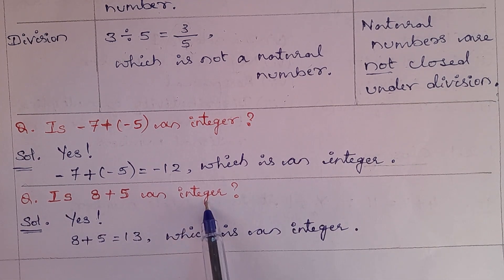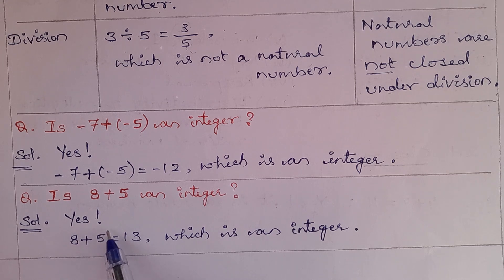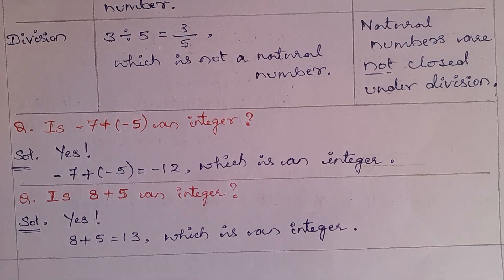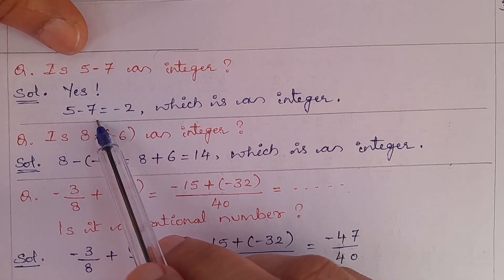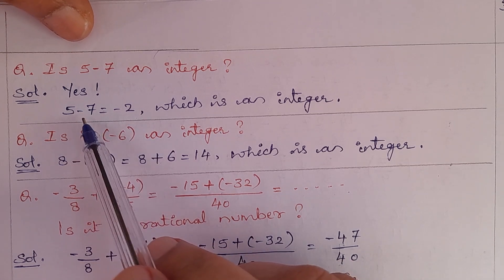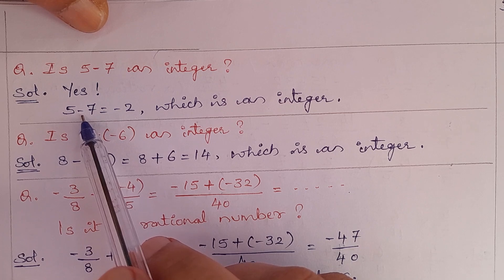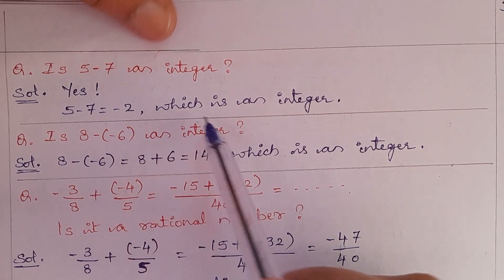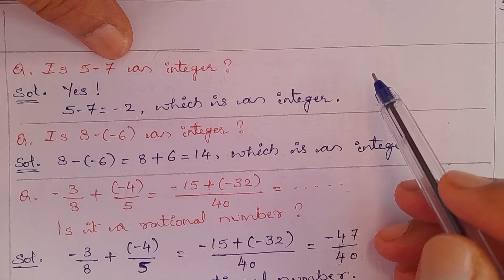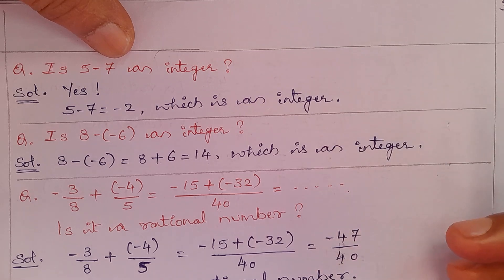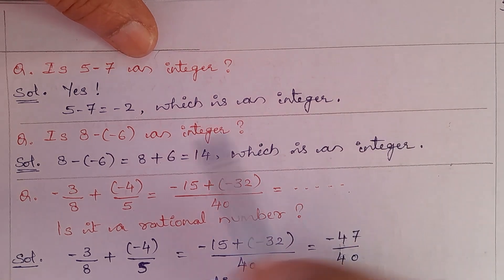Is 8 + 5 an integer? Yes, it is an integer. 8 plus 5 is 13, which is an integer. Is 5 − 7 an integer? Yes, it is an integer. 5 minus 7: the difference between these two is 2, and the bigger integer is 7 whose sign is negative, so we put a negative sign — the answer is minus 2, which is an integer. Integers include negative numbers, 0, and positive numbers: …−2, −1, 0, +1, +2, etc.